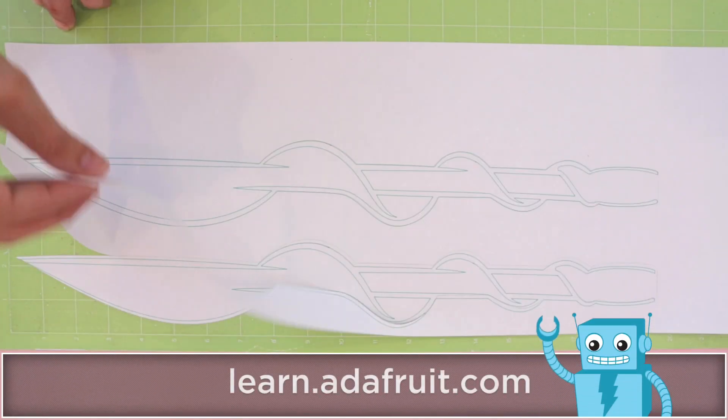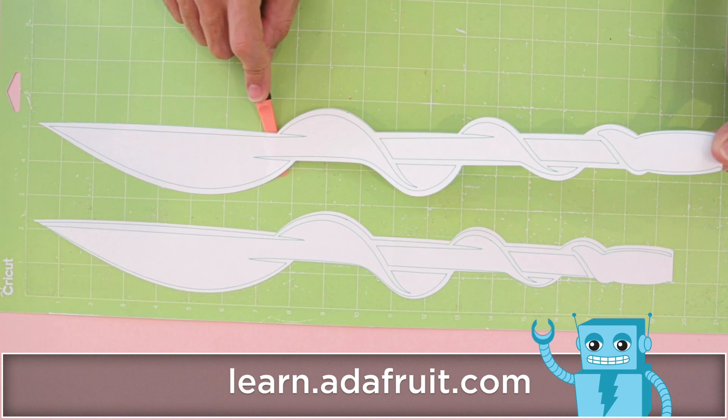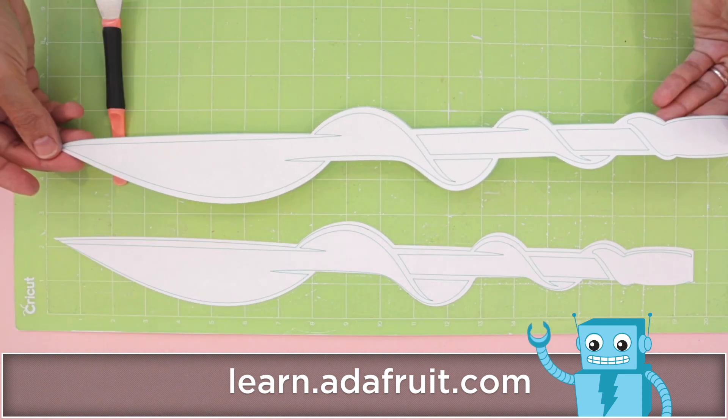Download our free templates and print them out for building the parts of the wand. You can also use a vinyl cutter to speed this up.